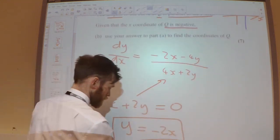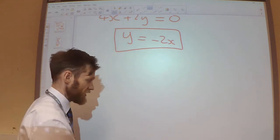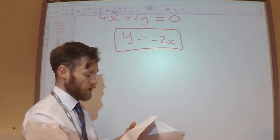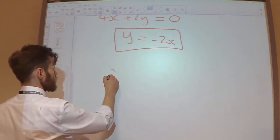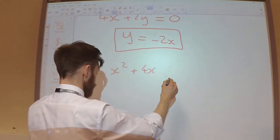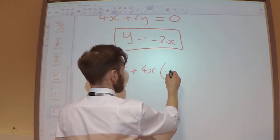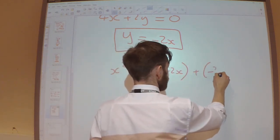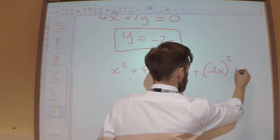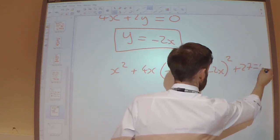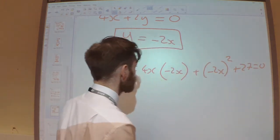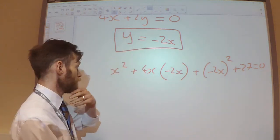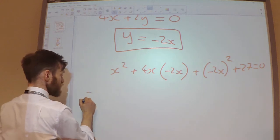So it's x squared plus 4xy, so 4xy plus y squared plus 27 equals zero. So I've substituted this into my equation. Let's simplify that.